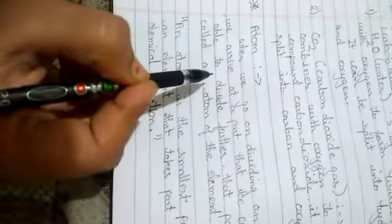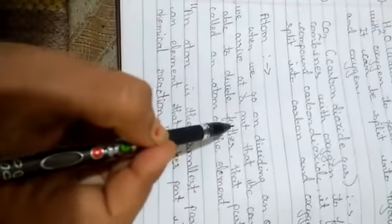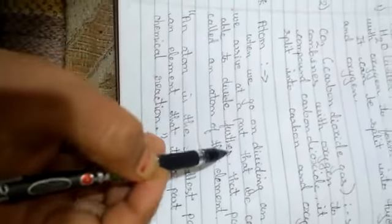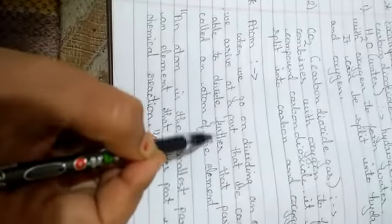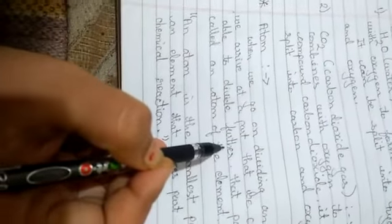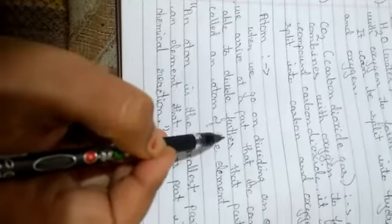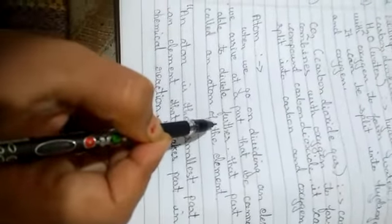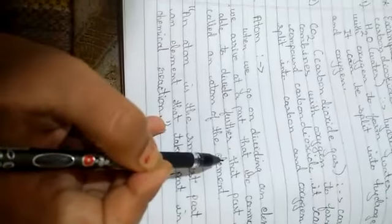Here we see an example. Copper is an element. If we are dividing it into many parts, then a time comes when we cannot divide it further, and that part of copper is called an atom of the element.